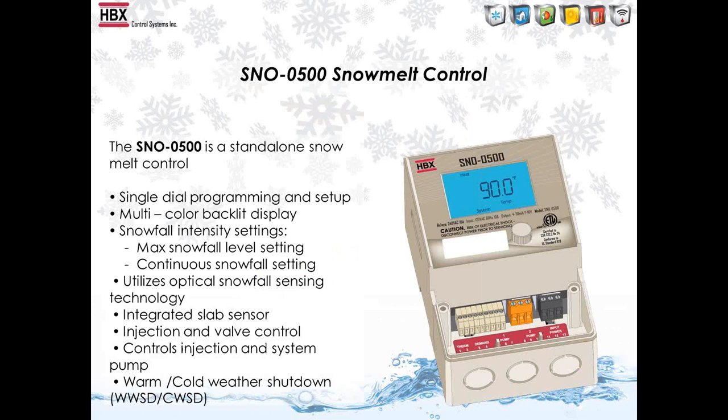The main control we use for snow melting is the Snow 500 standalone control. This will not support multiple boilers because it only has one boiler TT contact. You can do multiple mixing — either injection or valve control — and it's a single zone operation, so it works with one of our optical sensors. The control has idle, melt, and force melt demands built in. It has instantaneous and continuous snowfall settings, and you also have warm weather and cold weather shutdown.